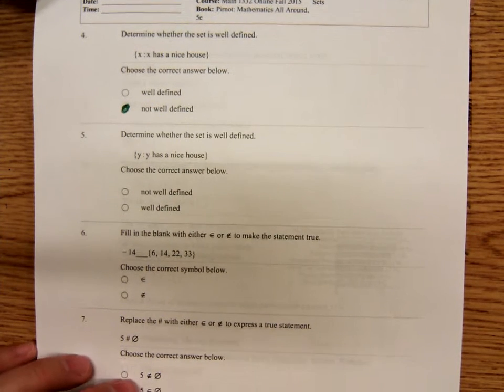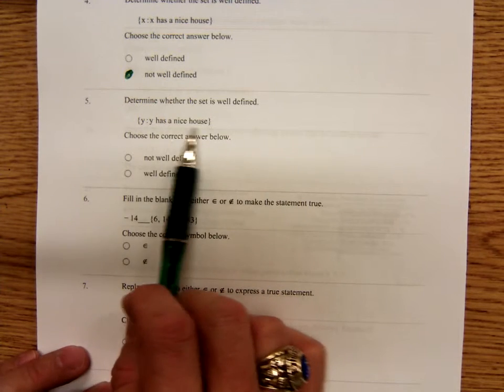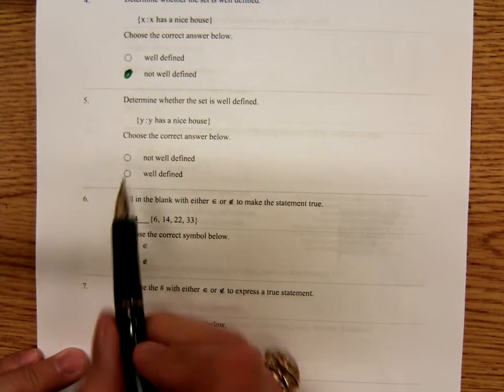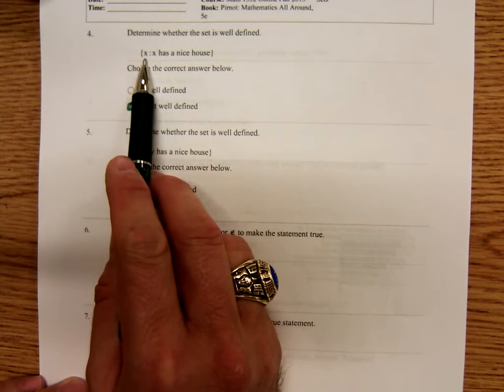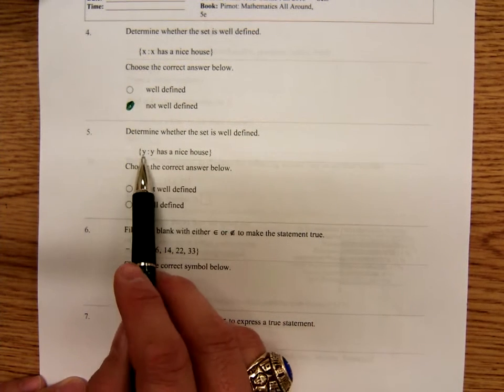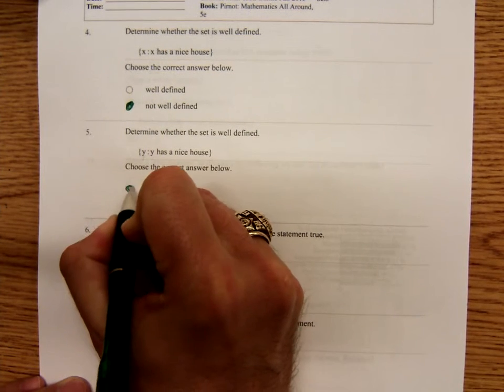And number five, the way it comes out, it's the exact same problem except notice there's nothing that says you must always use an X when using set builder notation. This one they use a Y. Y has a nice house. Same thing, not well defined.